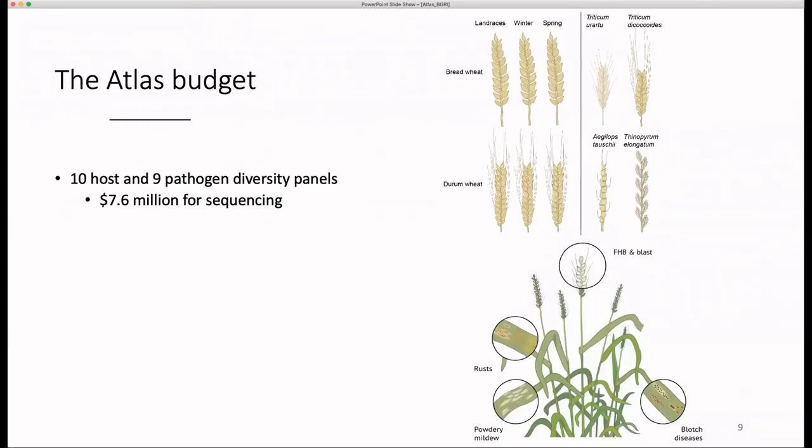To produce an atlas at the scale necessary, we would likely be aiming for around 10 hosts and 9 pathogen panels at about 200 accessions each. This would likely include landraces and winter and spring varieties of bread and durum wheats, as well as the progenitor species Triticum urartu, dicoccoides, and Aegilops tauschii, perhaps along with some wild grasses like Thinopyrum. The nine most important pathogens to include would likely be fusarium head blight, blast, the rusts, the blotch diseases, and powdery mildew, and in total the sequencing would cost $7.6 million.